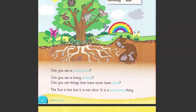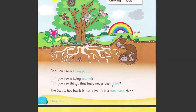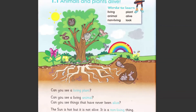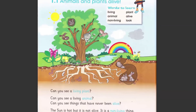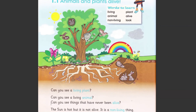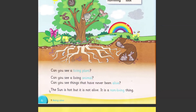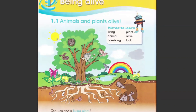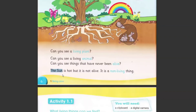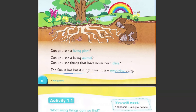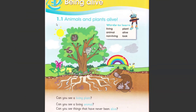Can you see the things that have never been alive? Is there anything that was never alive? The answer is the sun! The sun is hot, but it is not alive — it is a non-living thing. This is an important point you should remember.